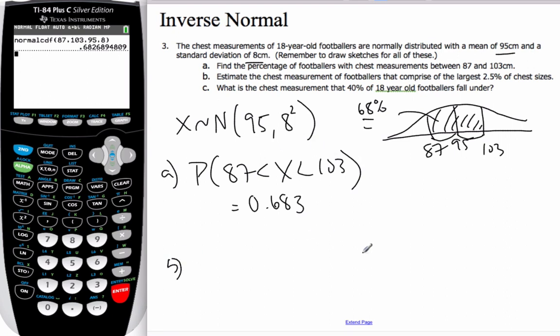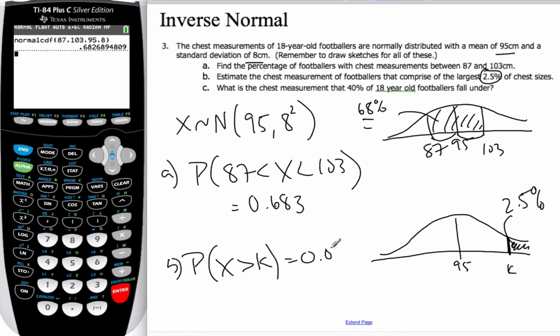Okay, part B then says, we have our normal curve here, here's 95. It says, estimate the chest measurements of footballers that comprise the largest 2.5% of chest sizes. Well, what that's saying is, I want to find this value here, K, where this area is 2.5%. And so, I'm looking for the probability that X is bigger than K, which is 0.025.